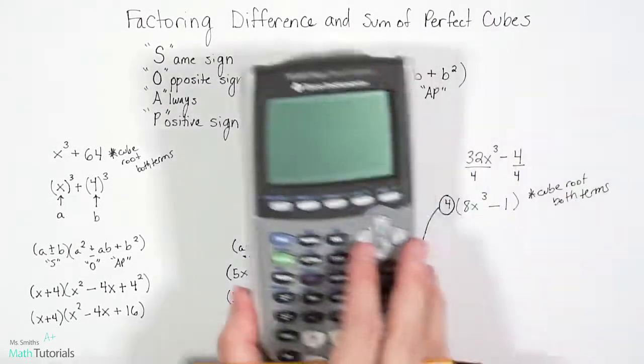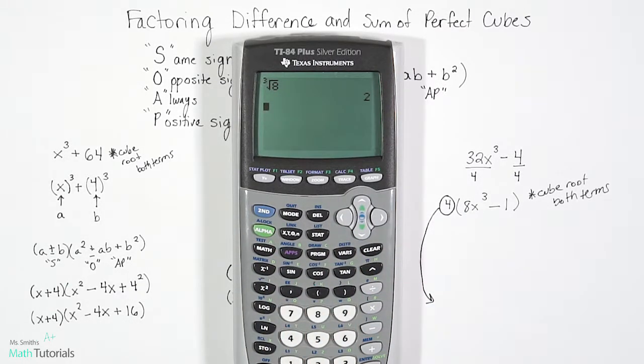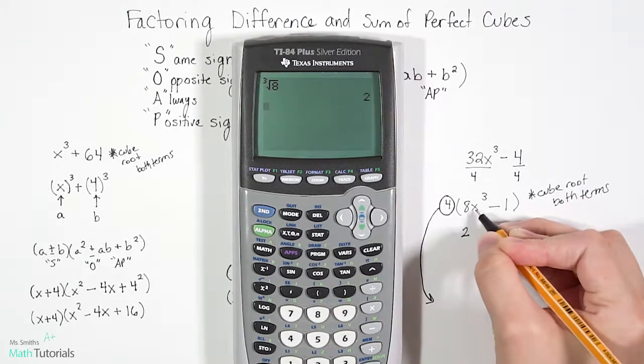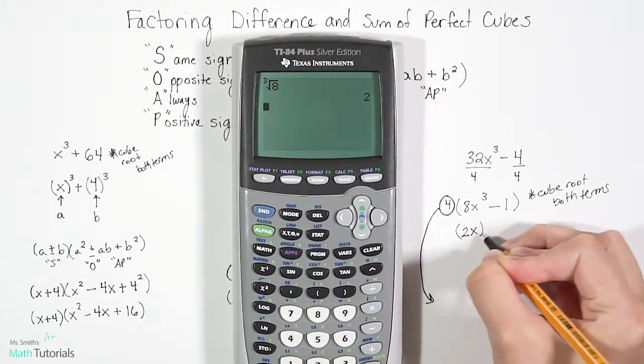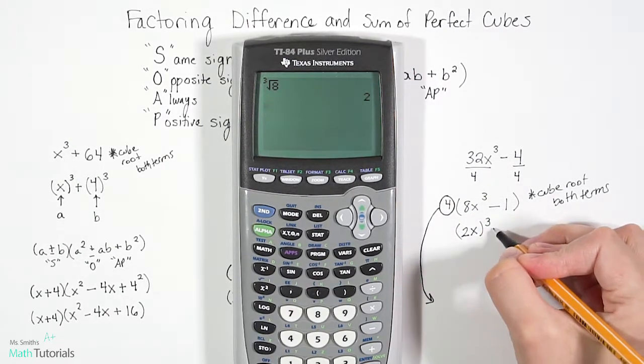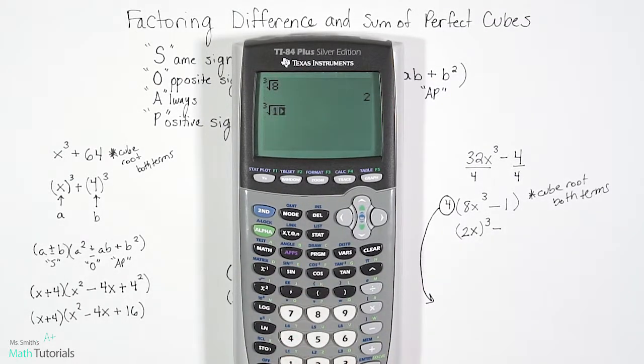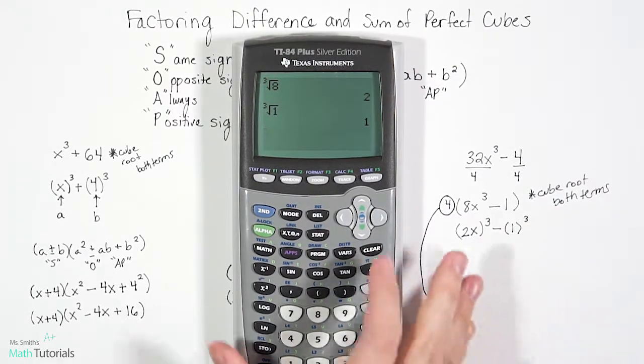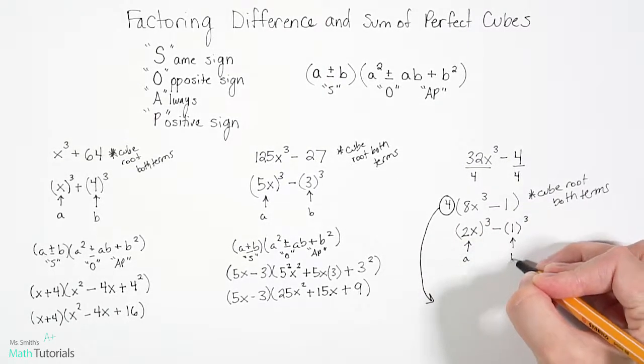So the cube root of 8, if I bring out my calculator, so cubed root of 8, now I've got a perfect cube. It's 2. And the cubed root of x³ is just x. So 2x cubed would give me 8x³. Bring my sign down. And the cubed root of 1 is actually just going to be 1, but I can show you. The cubed root of 1 is just 1. So we'll have our 1³. And now from here, this is our a. And this is our b.